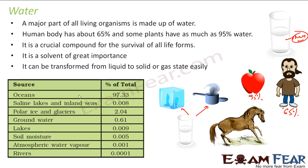If you look at the sources of water on Earth, the ocean has almost 97.33% of water — this is for the Earth, not the universe. You also have lakes, which contribute only a small percentage, about 2% water as ice, groundwater, lakes, soil moisture, and atmospheric water. So most of the water, about 97%, is in the ocean.